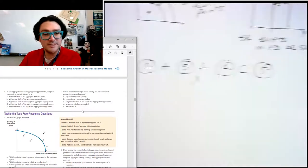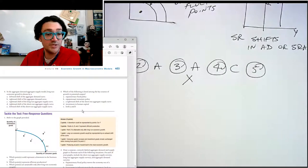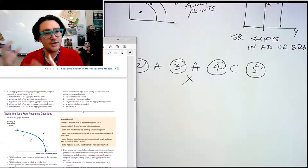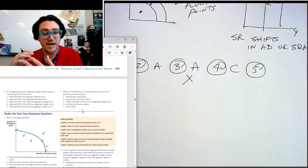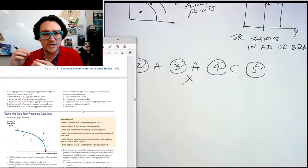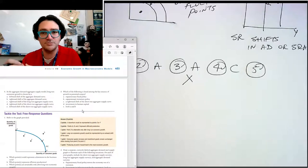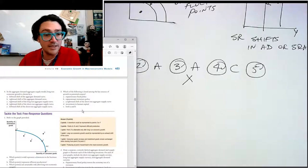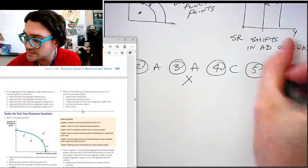And number five, which of the following is listed among the key sources of growth and potential output. So it would be investment spending or capital formation or something like that. Expansionary fiscal and monetary policy isn't going to create growth necessarily, it'll change where our output is. Rightward shift of short run aggregate supply wouldn't necessarily always create growth, right? That could just be lower inflationary expectations. Investment in human capital would definitely do it, but not both A and B. So D is the correct answer here.